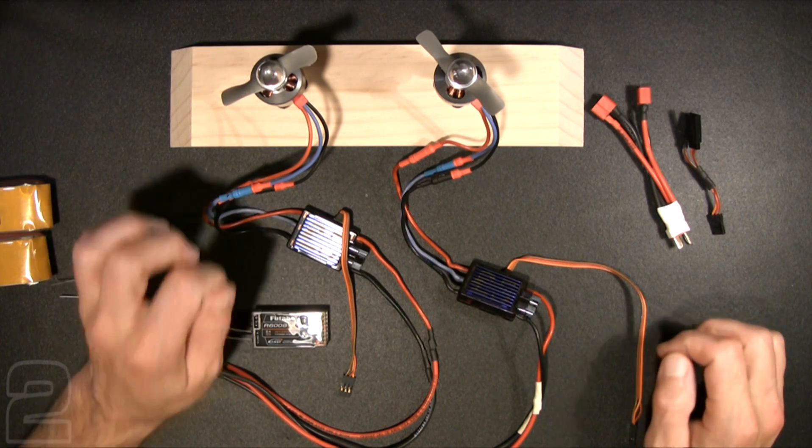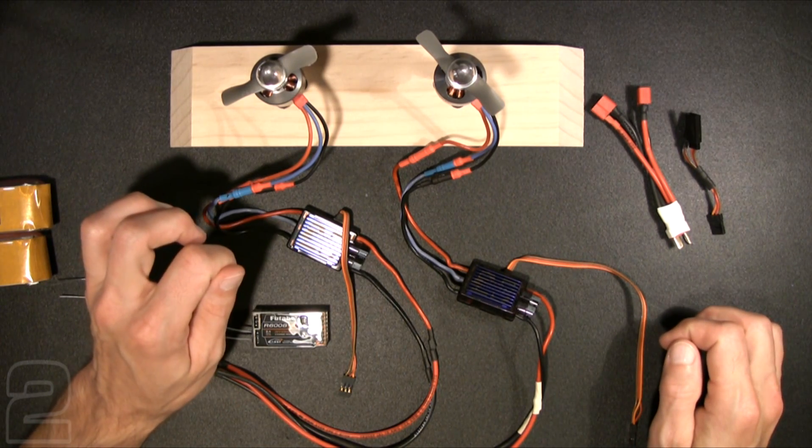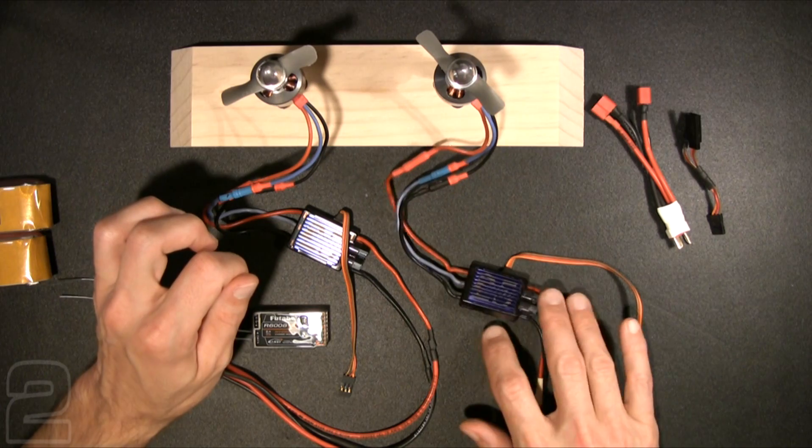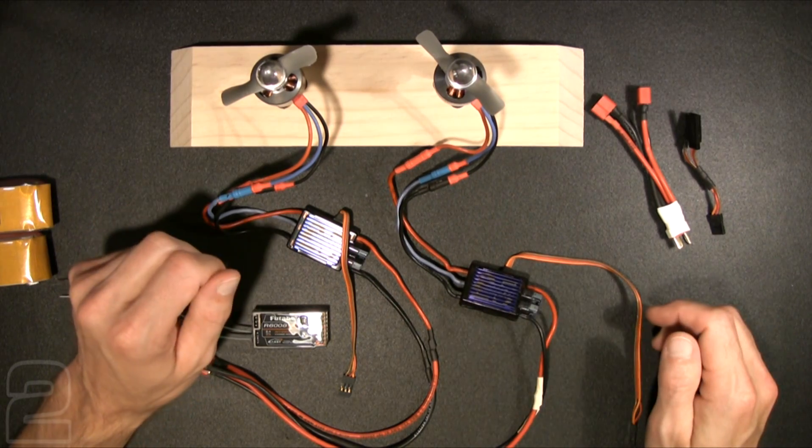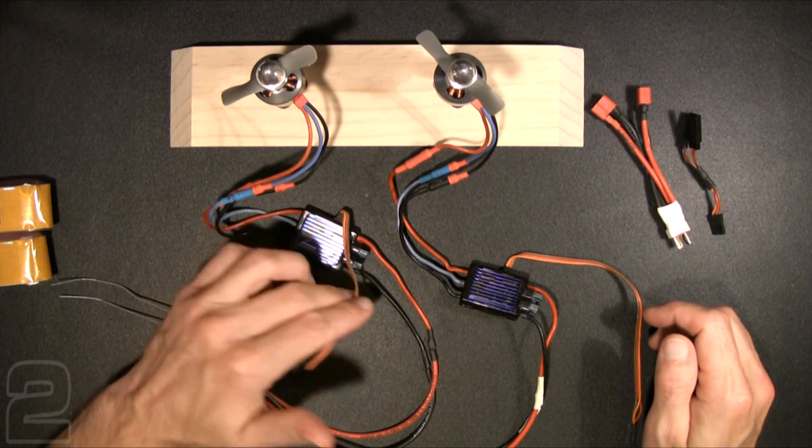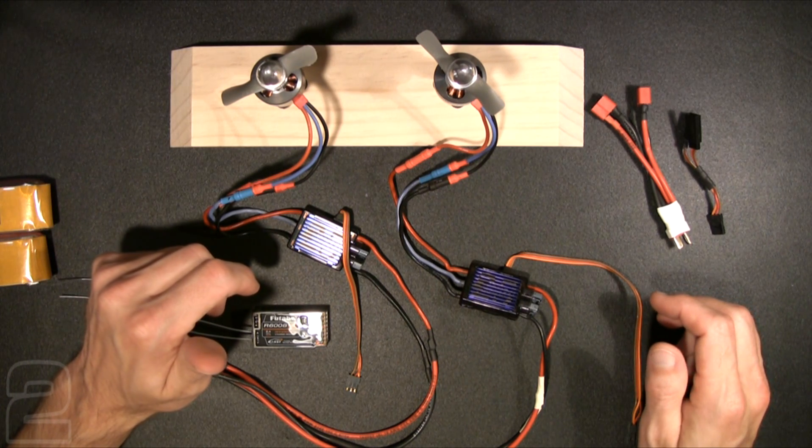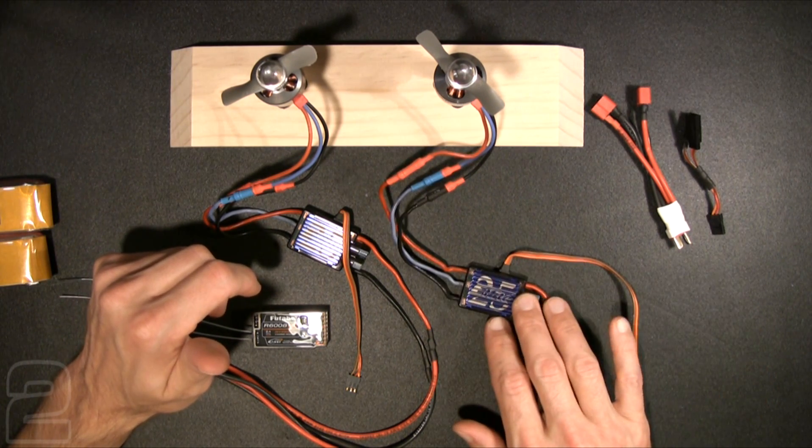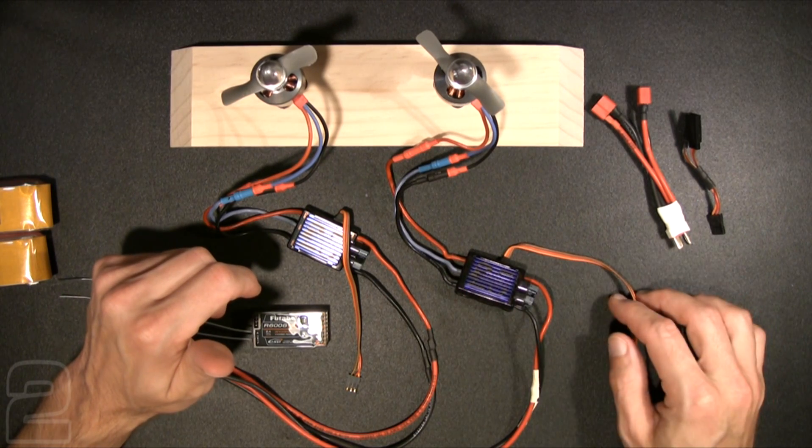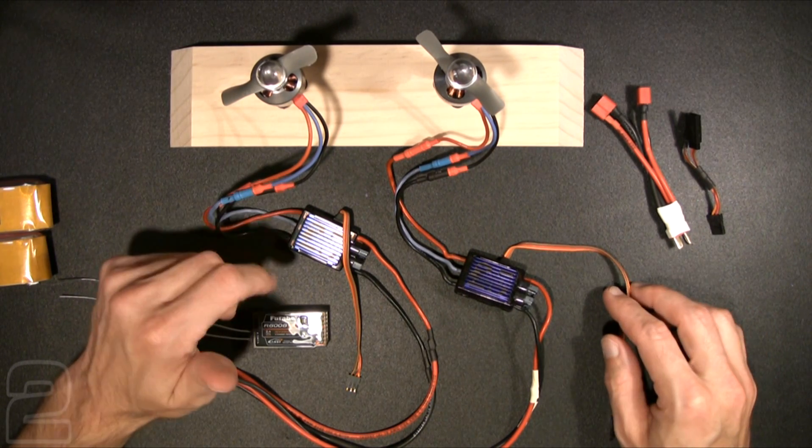It does give you some level of redundancy if you do have a problem with the BEC circuitry in one of the ESCs. You'd be able to still get radio power off of the other one. But quite frankly, I've never had that happen before and I think it's probably a rare occurrence. If something fails or circuitry fails in one of the ESCs, you're probably going to lose more than just the radio function. You'll lose probably the motor as well.